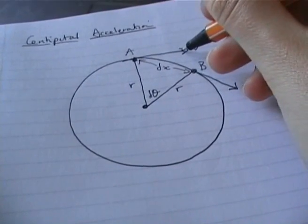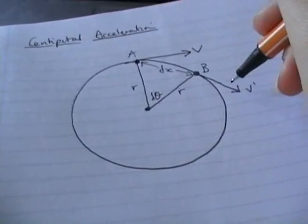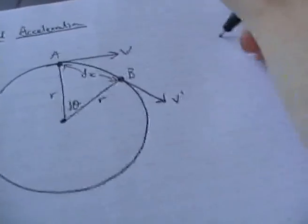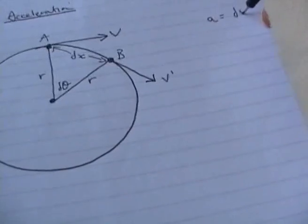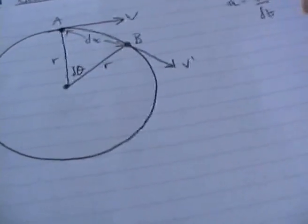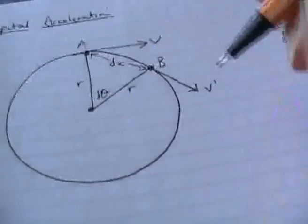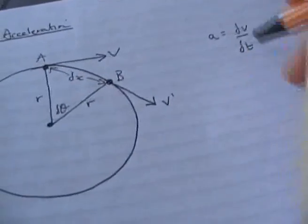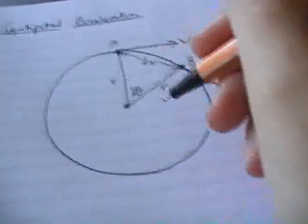So because the direction of the velocity is changing then there must be acceleration since acceleration is the change in velocity over time. So because there is a change in velocity there is an acceleration and the acceleration always acts towards the centre of the circle.